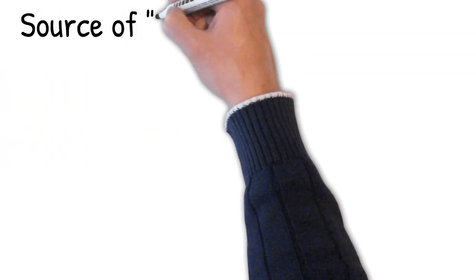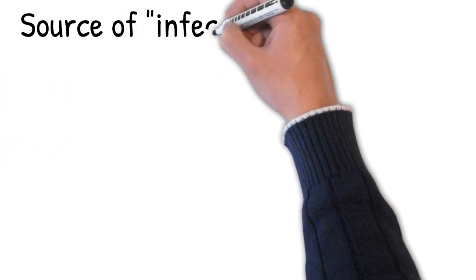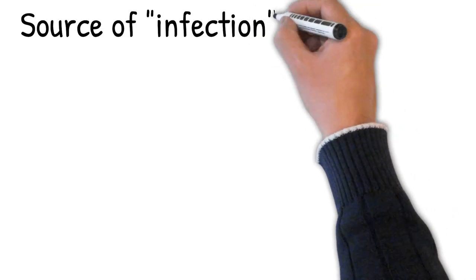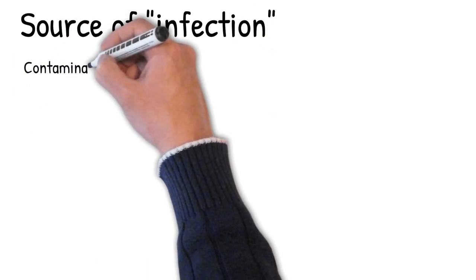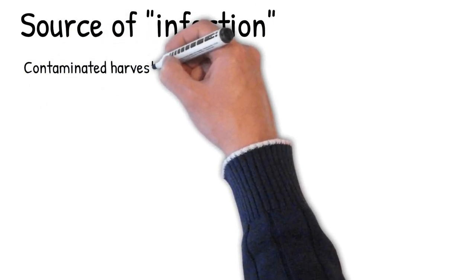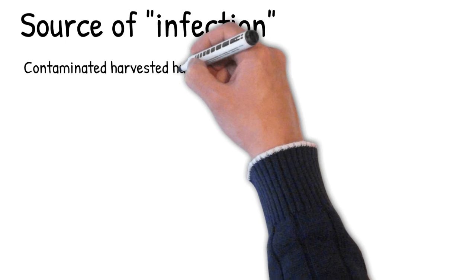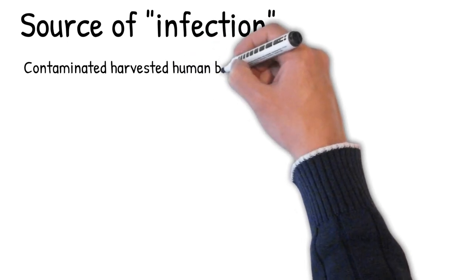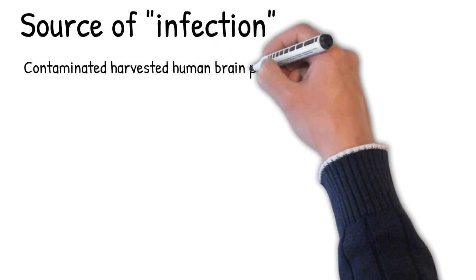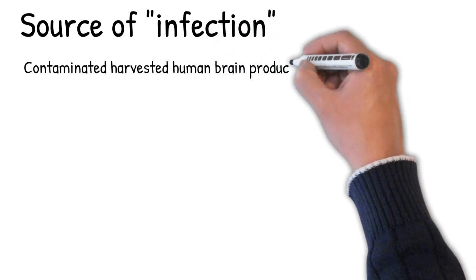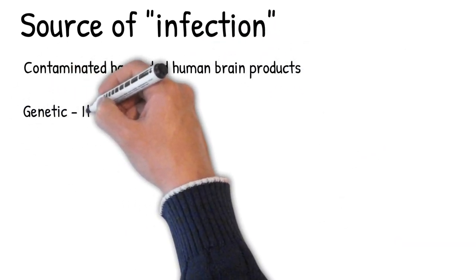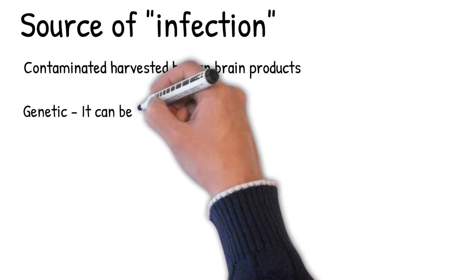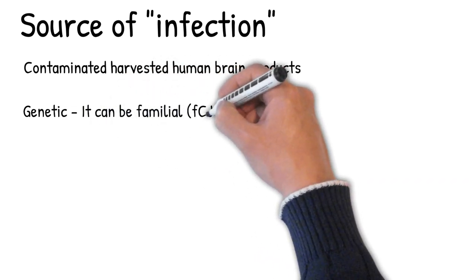The defective protein prions can be transmitted by contaminated harvested human brain products, corneal grafts, dural grafts, electrode implants, and human growth hormone. It can be familial (fCJD), or it may appear without clear risk factors in the sporadic form (sCJD).